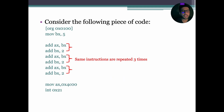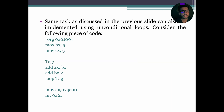Let's consider the following piece of code. In this example, two instructions — ADD AX, BX and ADD BX, 2 — are repeated three times. The same output can be achieved by implementing unconditional loops. In the loop version of the code, the CX register is initialized to 3 because we want to repeat the code three times.